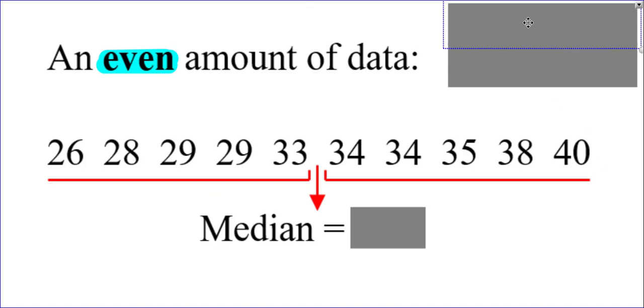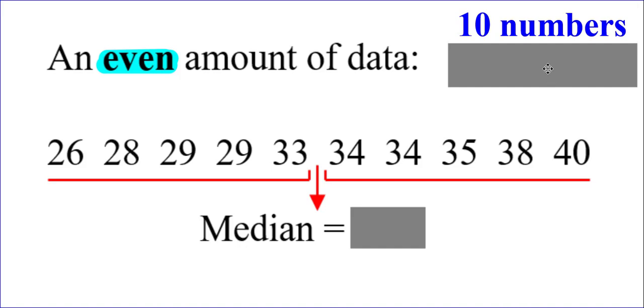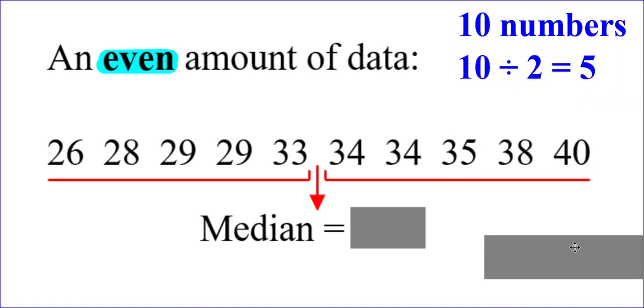However, it will be a little bit different. Here we had ten numbers. If we take ten divided by two, that actually gives us a whole number of five. But here's what you're going to do with that. Remember, with an even amount of data, there's actually two numbers in the middle. So that five means the fifth number and then the one right after it, which would be the sixth number. They're the two in the middle, and you have to find out what is halfway in between. So that's what happens when you have an even amount of data and you divide by two. You'll get a whole number. It's that number and the one after it that you have to find out what's halfway in between for your median.